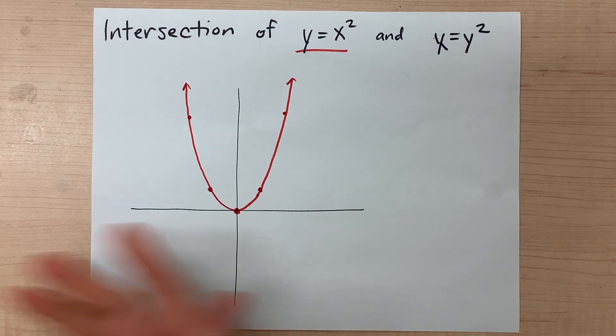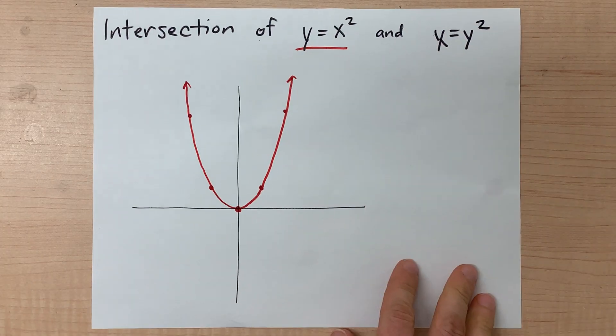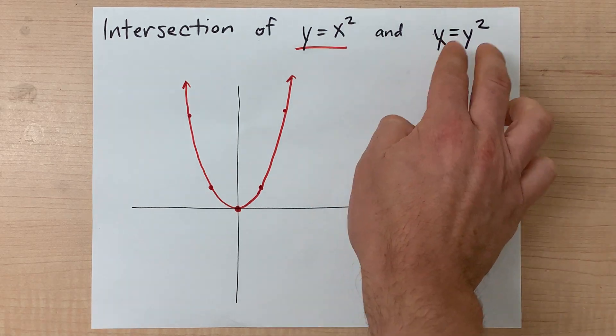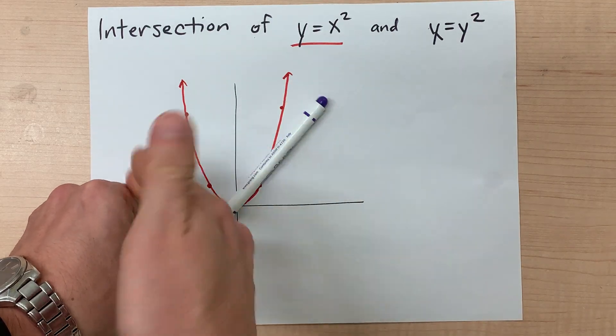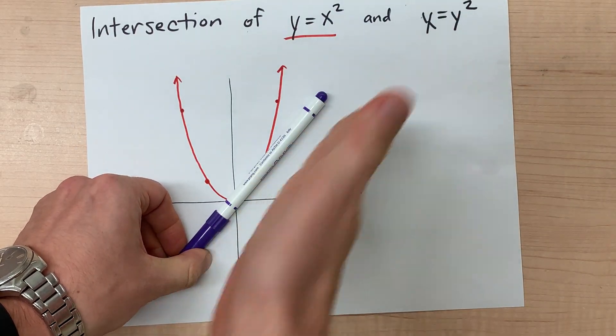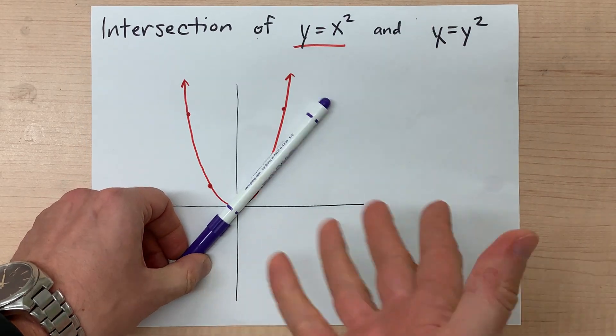Now we're going to do this for x = y² as well. Again, this is the inverse of that, so one option is to take the parabola and reflect it along the line y = x. That's one strategy.